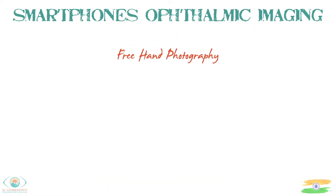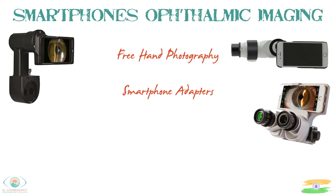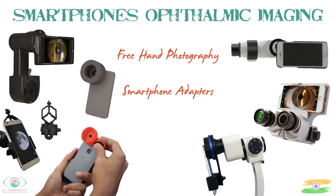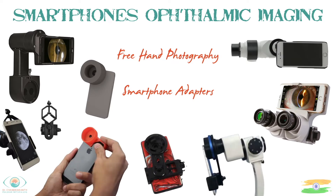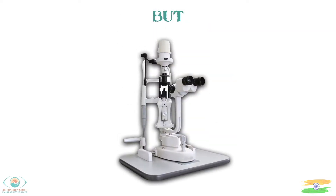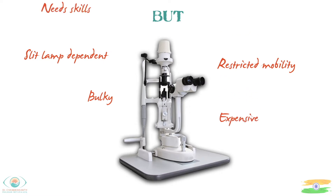Smartphone ophthalmic imaging is done by freehand photography or smartphone adapters. Various forms of smartphone adapters are present in the market, including ones made by 3D printing or universal adapters available on Amazon and Flipkart. Although smartphones are handy, they require a slit lamp, which cannot be used in remote locations as it is bulky and expensive, and fixing an adapter needs a minimum amount of skill.